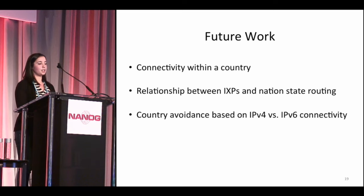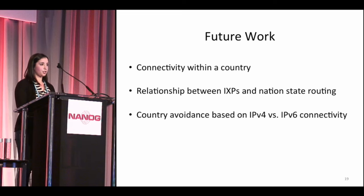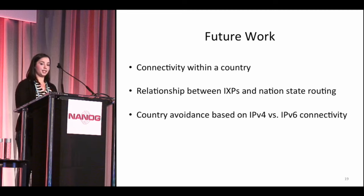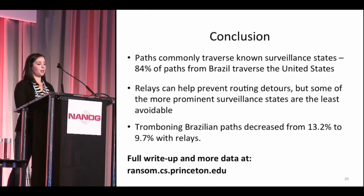For future work, we plan to study connectivity within a country — we noticed that clients in one geographic part of a country may have better country avoidance than clients in different parts of the same country. We also want to study the relationship between IXPs and routing detours in more detail, specifically whether IXPs appear on tromboning paths and why. The last area we're pursuing is IPv6 connectivity — our whole study was based on IPv4, and we expect the results would look quite different for IPv6.